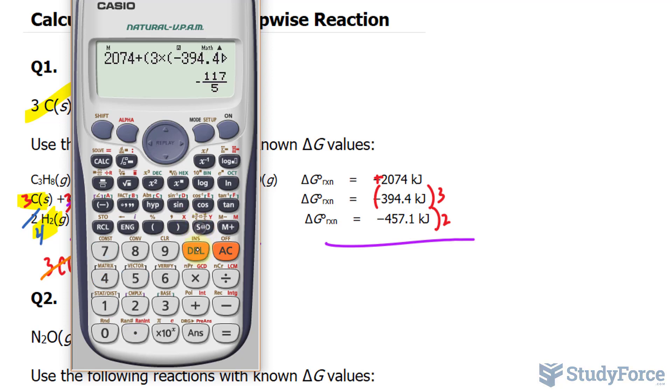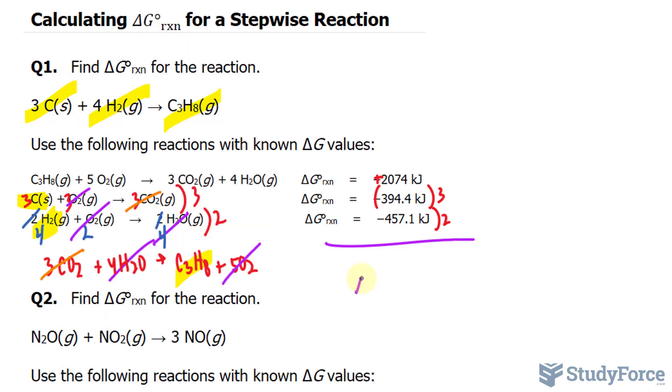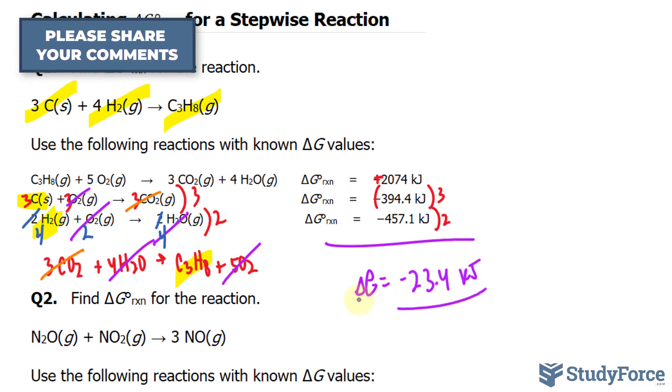And we end up with a delta G for this reaction that's negative 23.4 kilojoules. It's negative, so it will be spontaneous.